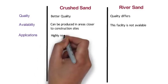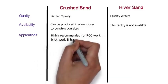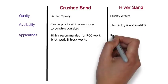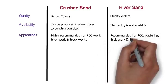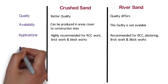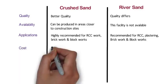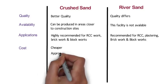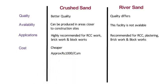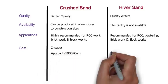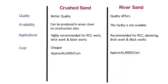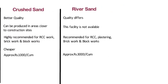Applications: Crushed sand is highly recommended for RCC work, brick work, and block works, whereas river sand is recommended for RCC, plastering, brick work, and block work. Cost: Crushed sand is cheaper than river sand. The rate of crushed sand is approximately Rs. 1000 per cubic meter, whereas the rate of river sand is approximately Rs. 3000 per m³, and this rate depends on the location of the site and availability of sand.